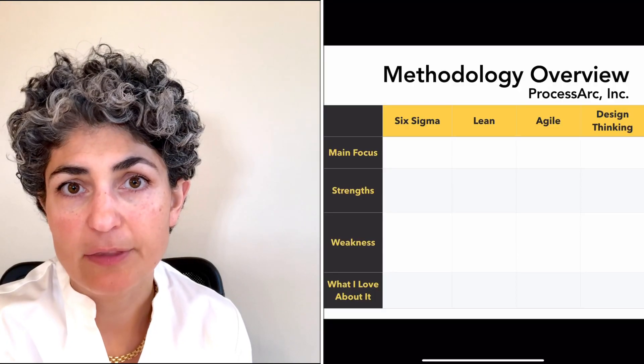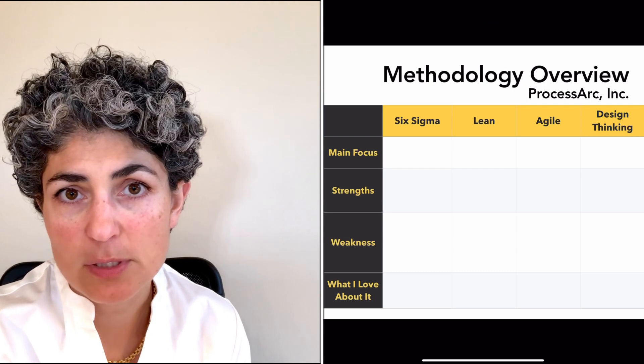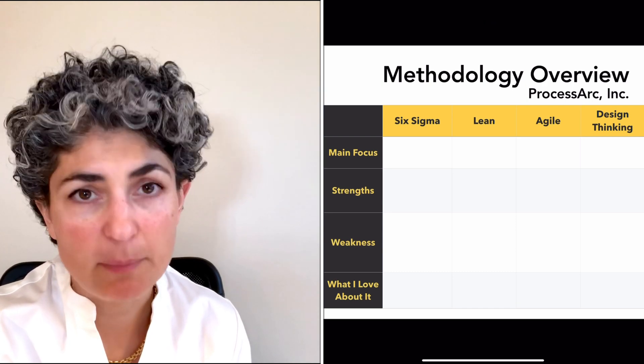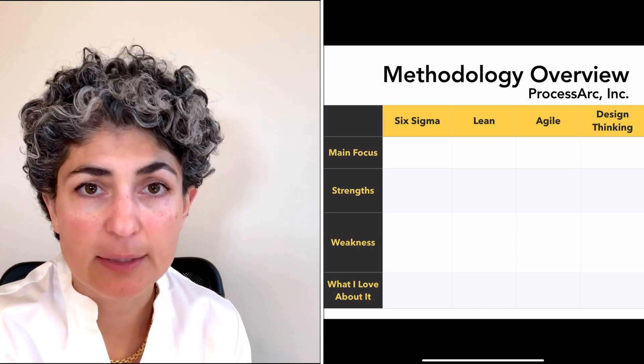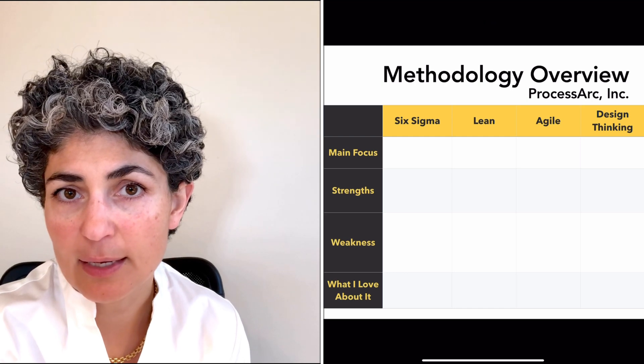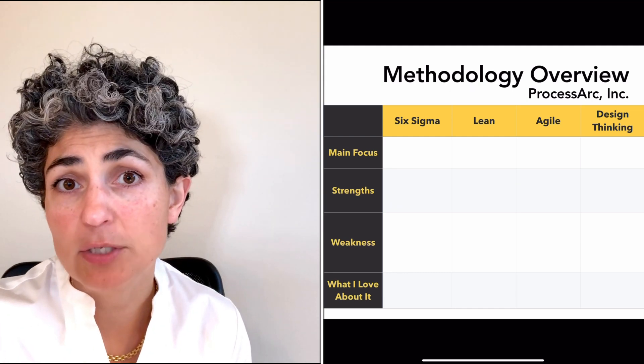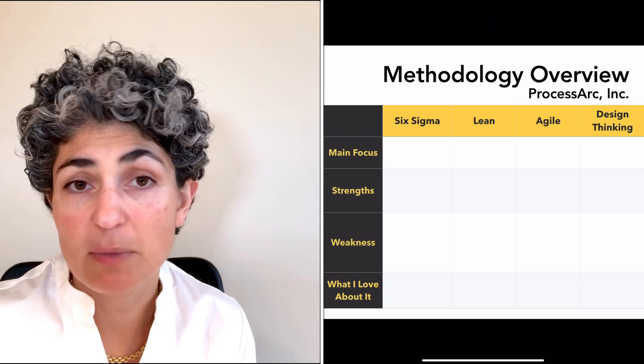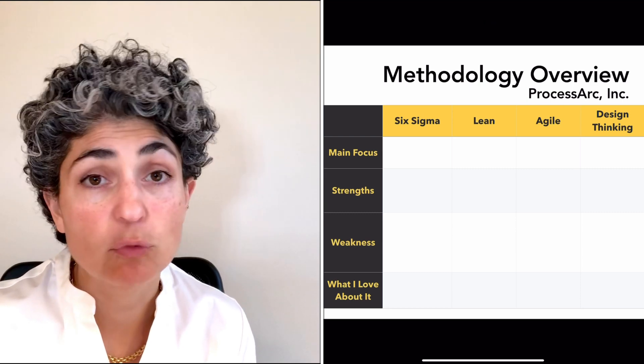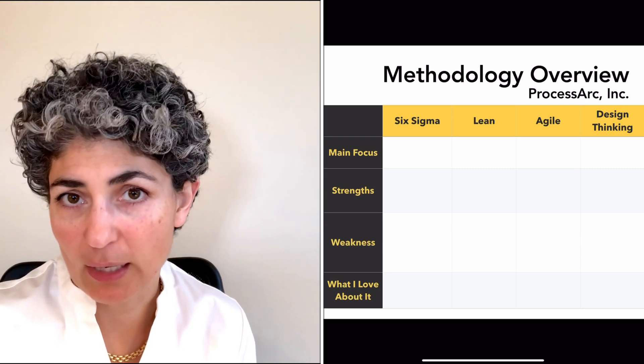Okay everyone, here's the framework or the grid that we're going to fill out together. At the very top, we've got the four most powerful methodologies: Six Sigma, Lean, Agile, and Design Thinking. And then on the other axis, we're going to talk about what the intent of the methodology is, its strengths, weaknesses, and what I love about them. Let's start with the intent of these methodologies.